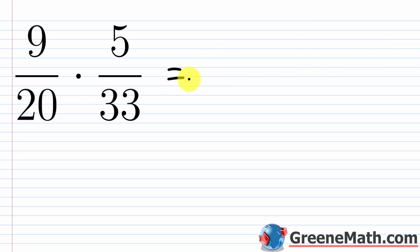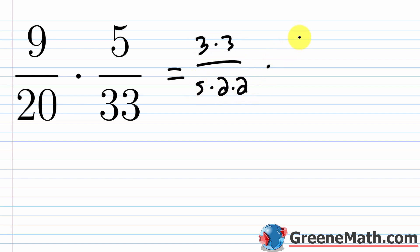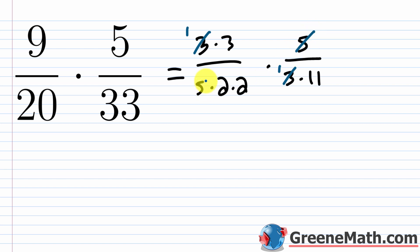Here's a faster approach for nine over twenty times five over thirty-three. Break down: nine is three times three, twenty is five times two times two, and thirty-three is three times eleven. Cancel a three from the numerator nine with the three in thirty-three. Cancel the five in the numerator with the five in twenty. Multiply remaining: three times one equals three over two times two times eleven equals 44. The simplified answer is three over 44.